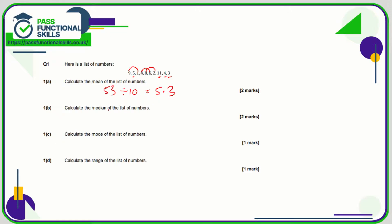The median is the middle number when they're put in order. So let's put these numbers in order: 1, 2, 3, 4, 4, 5, 6, 8, 9, 11. You can put them in ascending or descending order — ascending makes more sense. Now we chop one off each side and keep going until we isolate one or two in the middle. Here we isolate two. So the median is halfway between 4 and 5, which is 4.5.